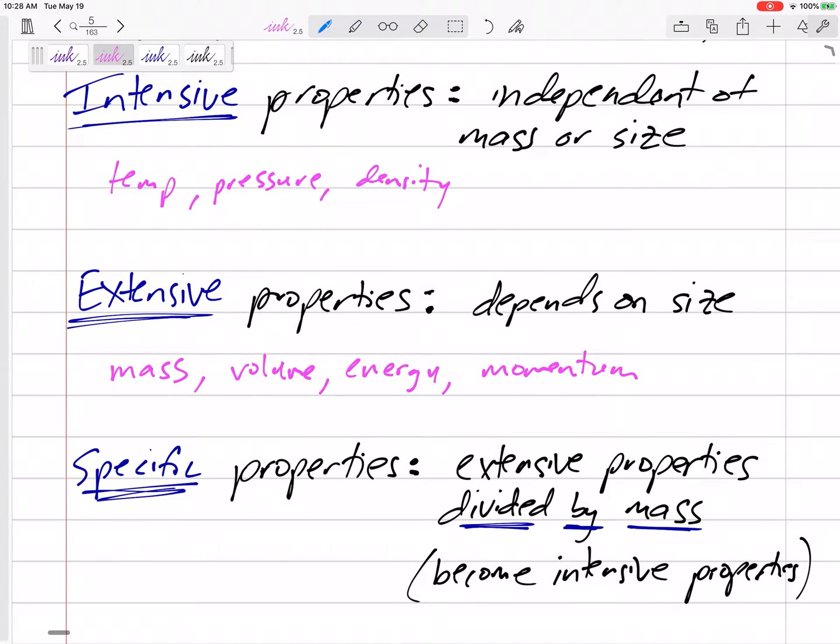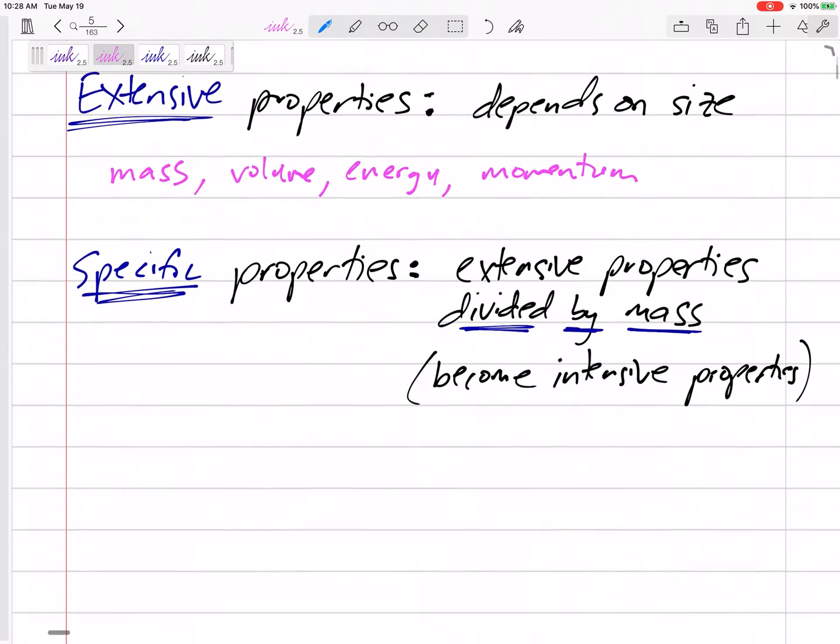So in order to compare things, if I want to compare my system to your system or a different system, and if you have a lot more than I have, it might be helpful to take those extensive properties and divide them by mass. So it's almost like they become intensive properties.